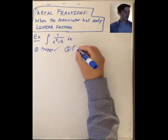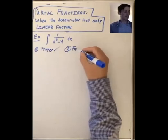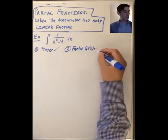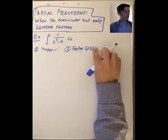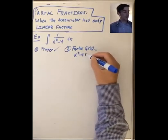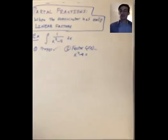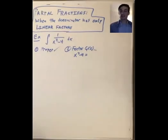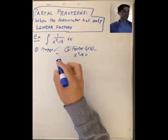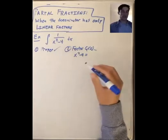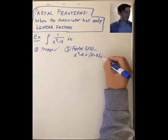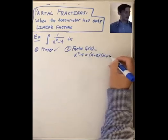The next thing we do is factor the denominator. In this case we want to factor x squared minus 4, and there's a very nice way to factor the difference of two squares: x squared minus a squared factors as x minus a times x plus a. So in this case we have x minus 2 times x plus 2.